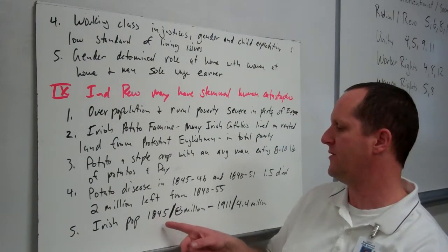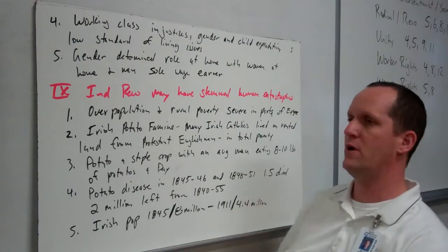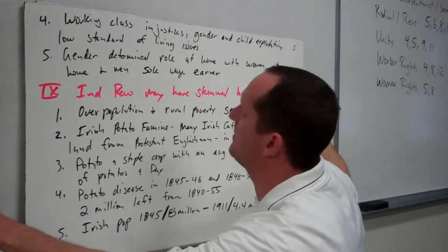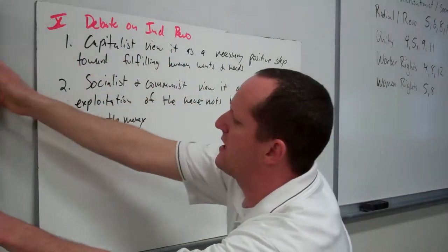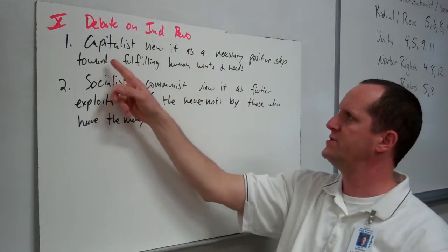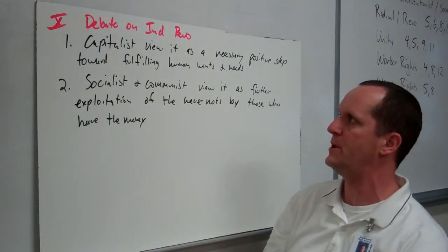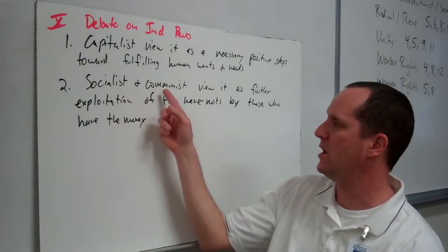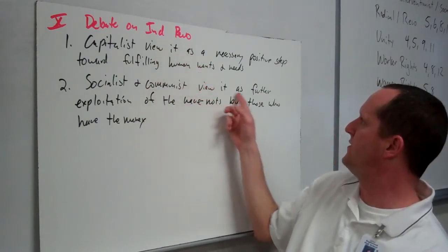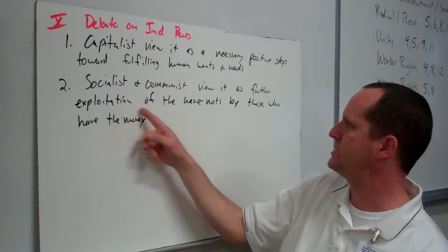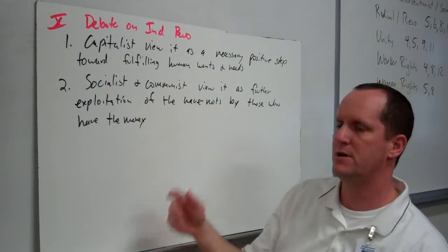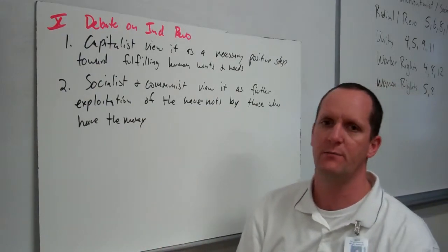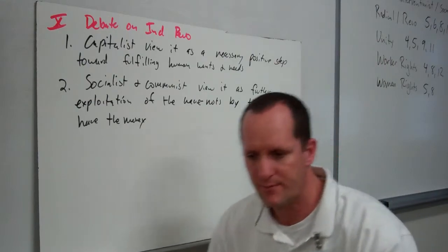Ireland's population in 1845 was 8 million; by 1911 it was about half — roughly 4 million people either died or left Ireland during this time frame. The debate of the Industrial Revolution: capitalists view it as a necessary positive step towards fulfilling human wants and needs, whereas socialists and communists view it as further exploitation of the have-nots — the proletariat — by those who have the money. Remember, history is no mystery. Take good notes.